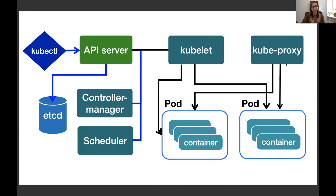There are two more components: kubelet and kube-proxy. Kubelet connects the actual cluster node to the control plane — it's the link between the nodes and the API server. Kubelet helps schedule pods and constantly tracks their health, sending updates so the lifecycle can continue if pods fail. Kube-proxy is a network communicator that allows pods to communicate with the outside world and with one another.